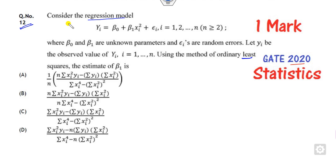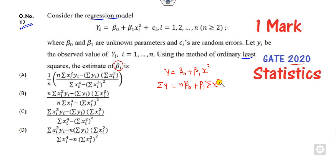Now look at question number 12. You have to find the estimator of beta-1. That is again very simple — you have to write the normal equations. The first is the summation of y equals beta-naught plus this term. The second, if you multiply by x-squared, the coefficient of beta-1 gives summation x-squared y equals beta-naught times summation x-squared plus beta-1 times summation x to the fourth.